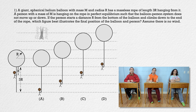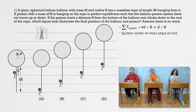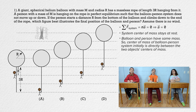Because the net external force acting on the balloon-person system equals zero, the acceleration of the system will also be zero. And because the system is at rest to begin with, the system will stay at rest relative to the earth the whole time. That means the center of mass of the balloon-person system will stay in the same location relative to the earth while the person climbs down to the rope. Because both objects have the same mass, the initial center of mass of the balloon-person system will be directly in the middle between the centers of mass of the two objects.